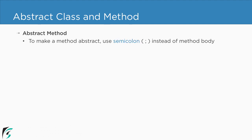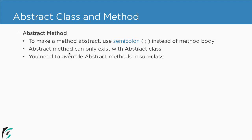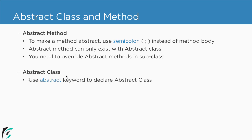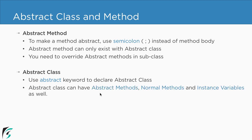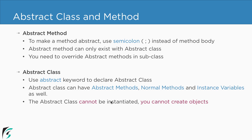To summarize: we learned about abstract methods — to make a method abstract, use a semicolon at the end instead of a method body. Abstract methods can only exist within abstract classes, not in normal classes. You must override abstract methods in subclasses, as we did with Rectangle and Circle. To declare a class as abstract, use the abstract keyword. Abstract classes can have abstract methods, normal methods, and instance variables. Most importantly, abstract classes cannot be instantiated — you cannot create objects from them.